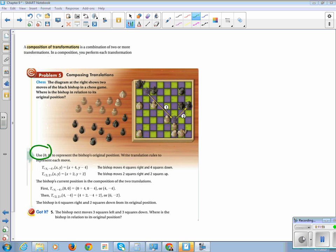The bishop next moves 3 squares left, so 3 squares left and 3 squares down. Where is the bishop in relationship to its original position? So if the original position is right here, he is plus 3 to the right. And he is 1, 2, 3, 4, 5, 5 units down.